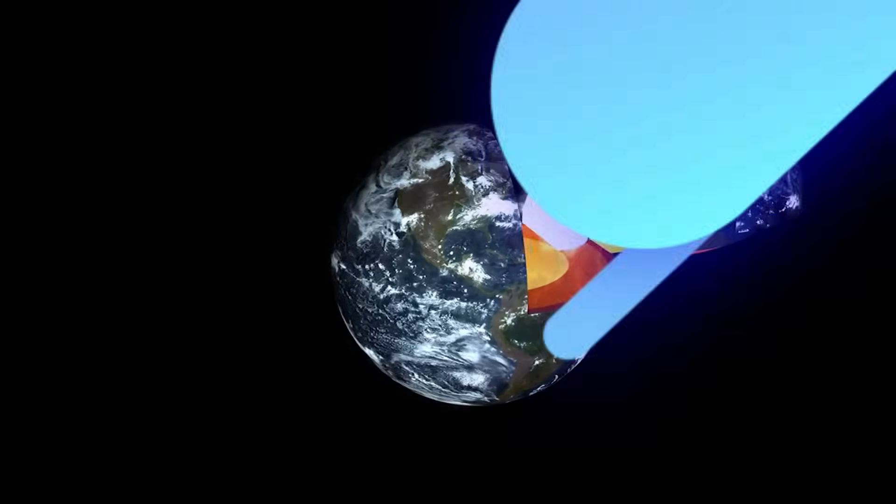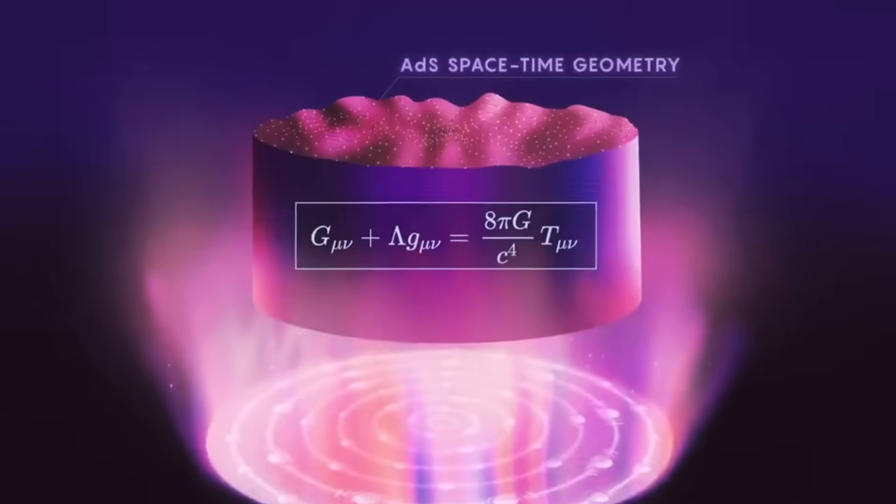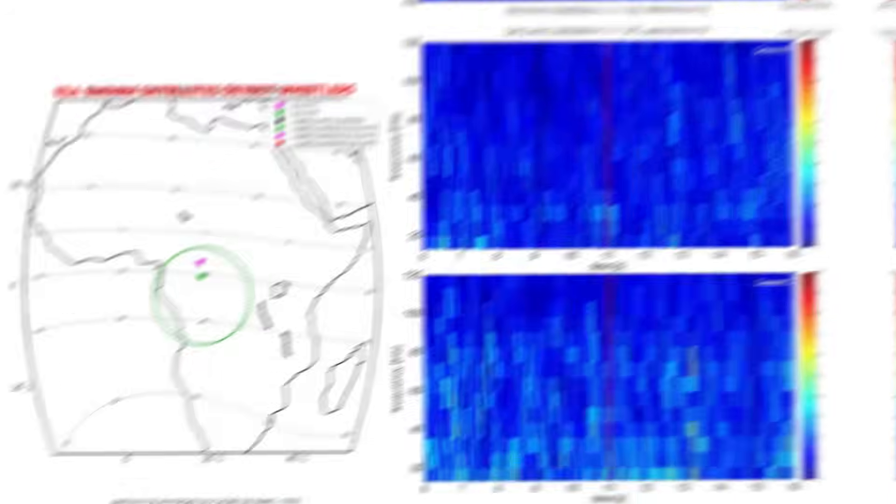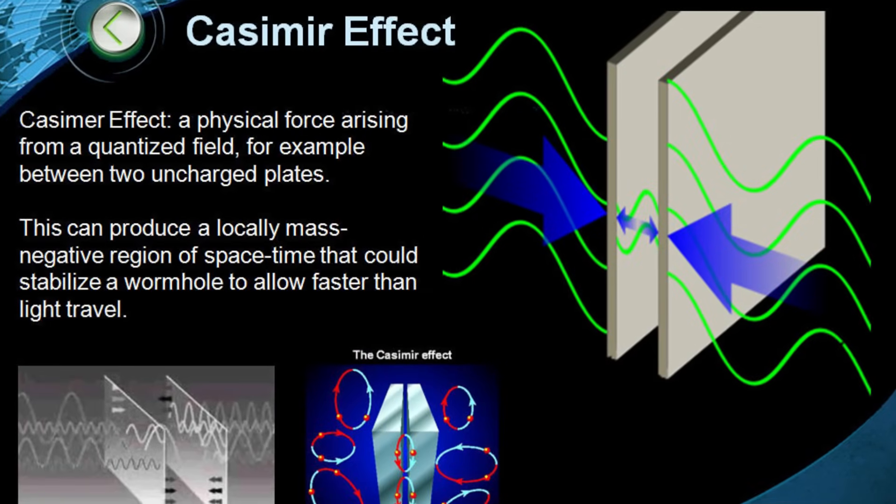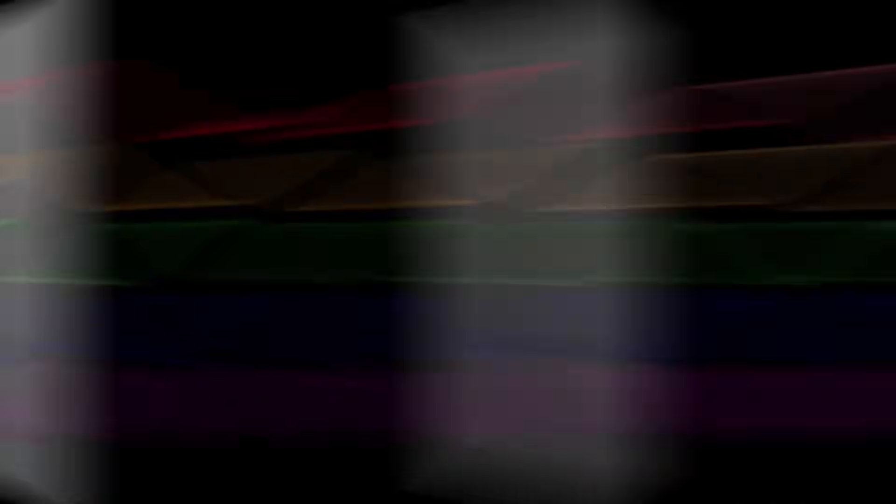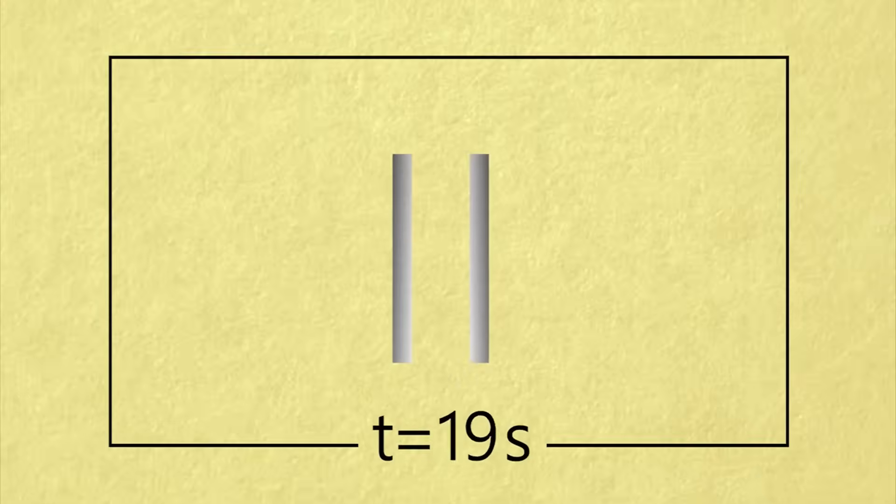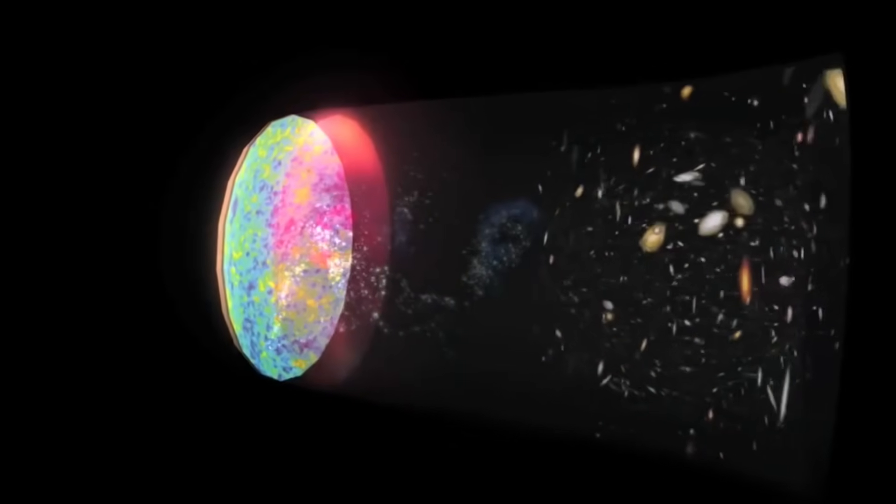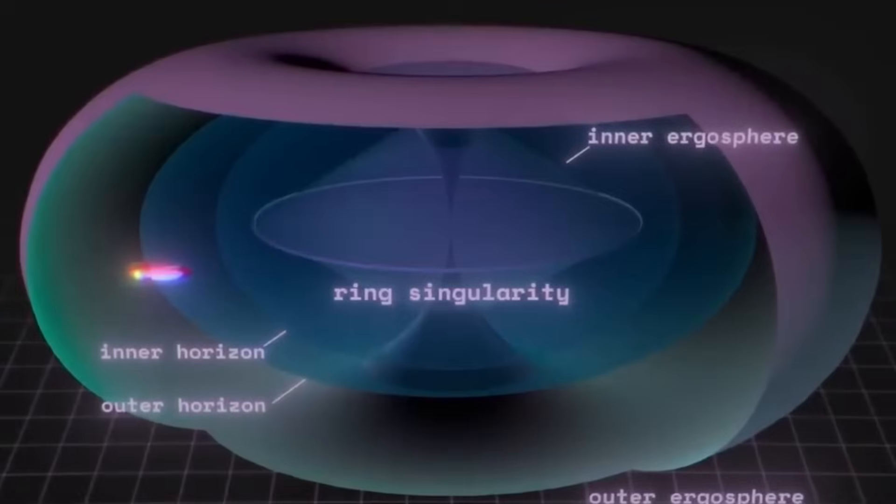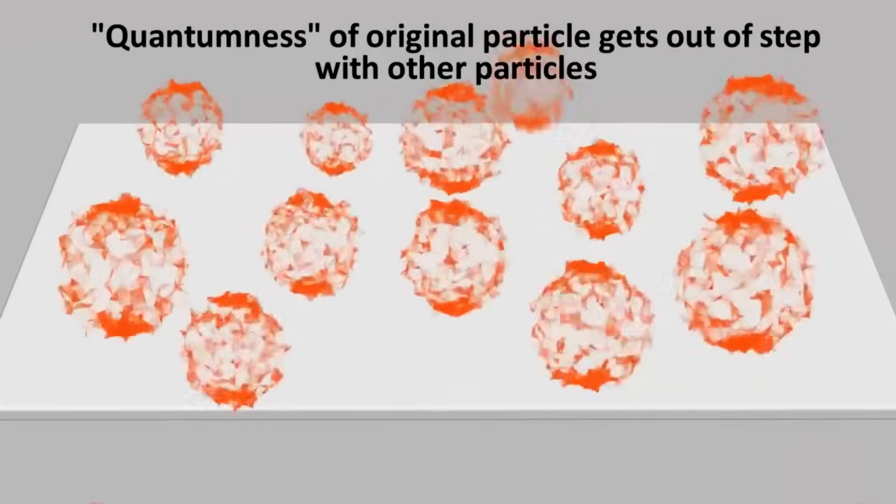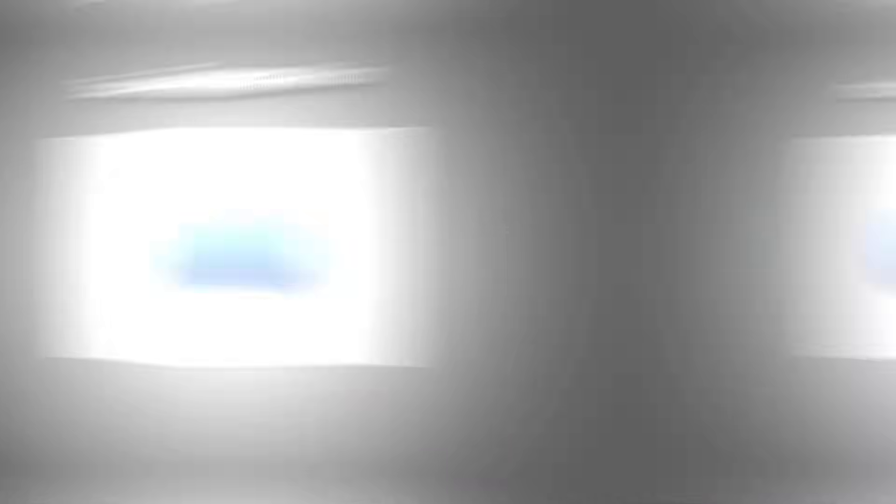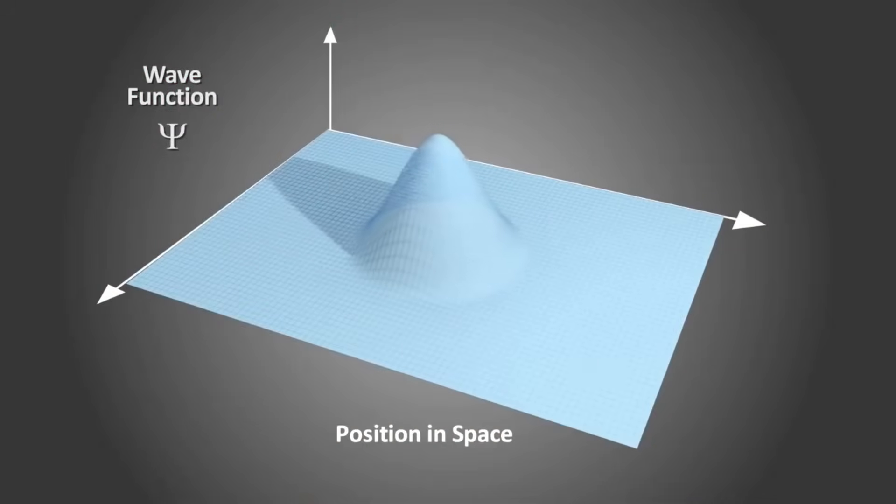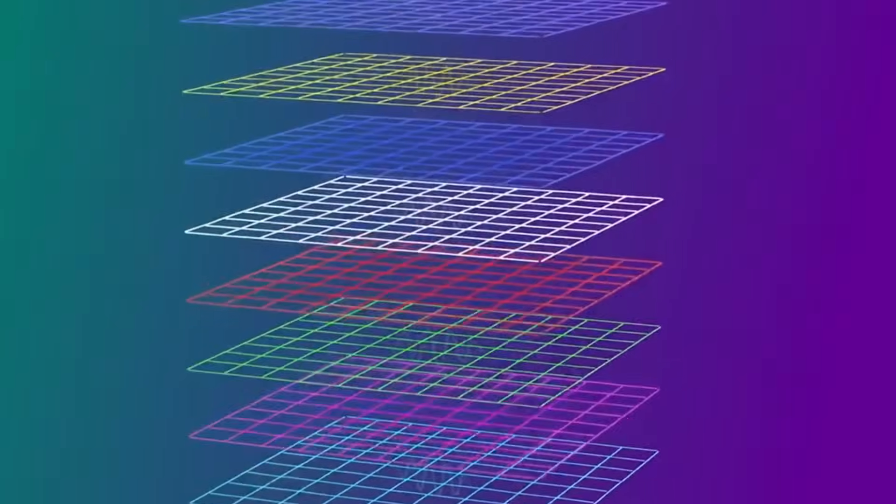This temporal rebound hints at quantum retrocausality, where future boundary conditions influence present states. If the magnetosphere is entangled with laboratory systems, information might flow backward in time to stabilize field coherence. These ideas challenge our notions of causality and chronology, suggesting that past, present, and future could be entwined within Earth's magnetic network. The implications are profound. Experiments we conduct today might be informed by responses yet to come. This speculation pushes the boundaries of physics and philosophy alike. And then the wildest theory emerged.